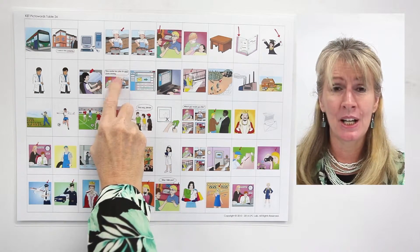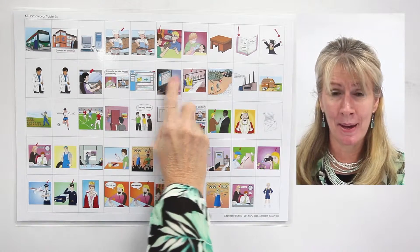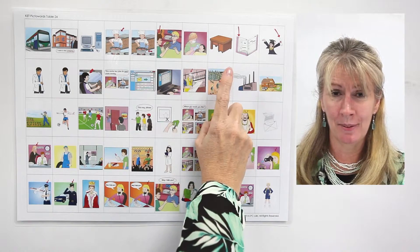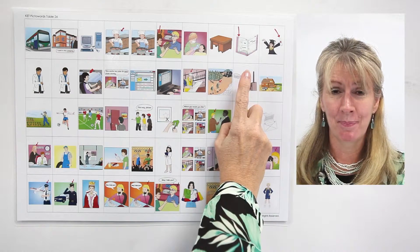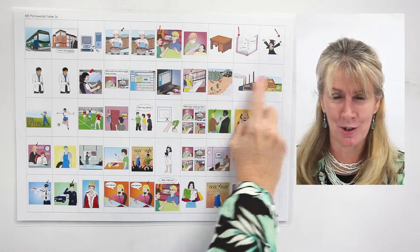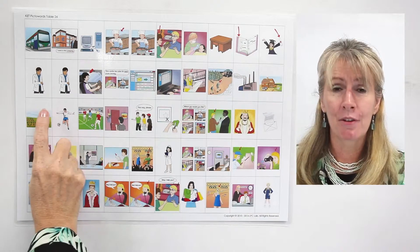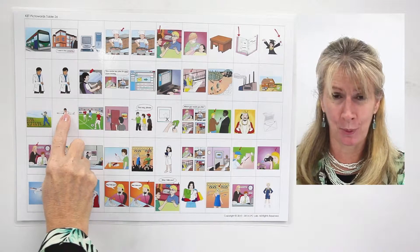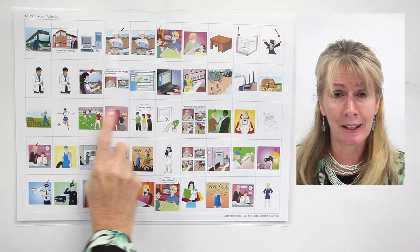Earn. Earn. Email. Email. Engineer. Engineer. Explorer. Explorer. Factory. Factory. Farm. Farm. Farmer. Farmer. Footballer. Footballer. Football player.